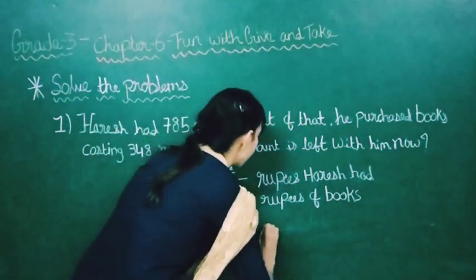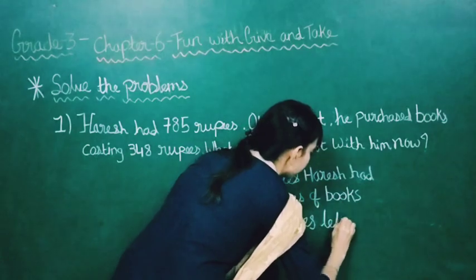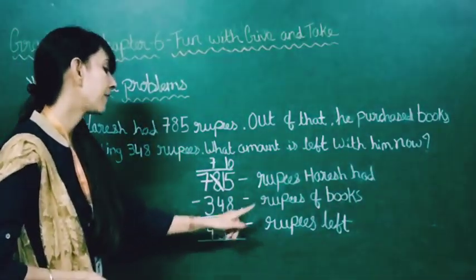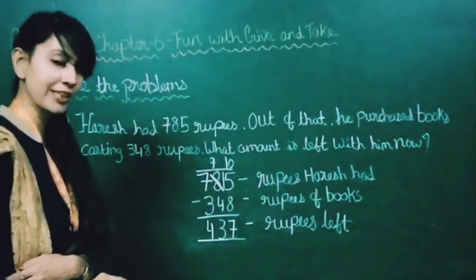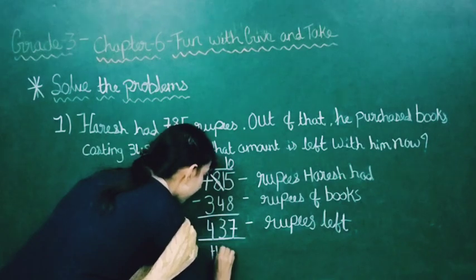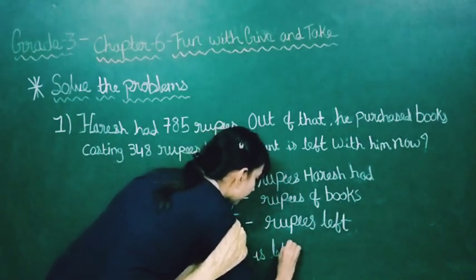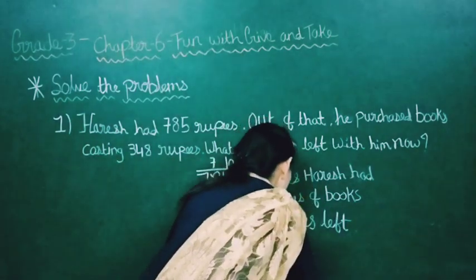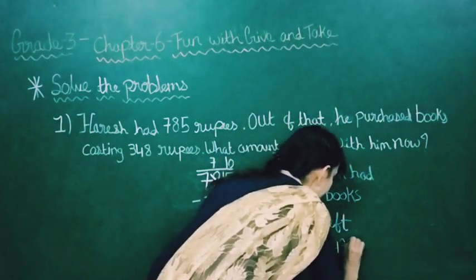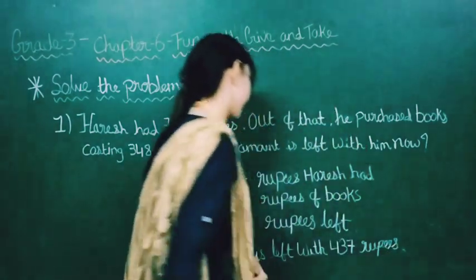Here comes the answer: 437. So 437 rupees is left with Harish.